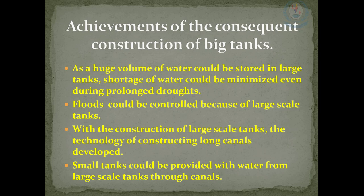Achievements of the consequent construction of big tanks: as a huge volume of water could be stored in a large tank, shortage of water could be minimized even during prolonged droughts. Floods could be controlled because of large-scale tanks. With the construction of large-scale tanks, the technology of constructing long canals developed. Small tanks could be provided with water from large-scale tanks through canals.